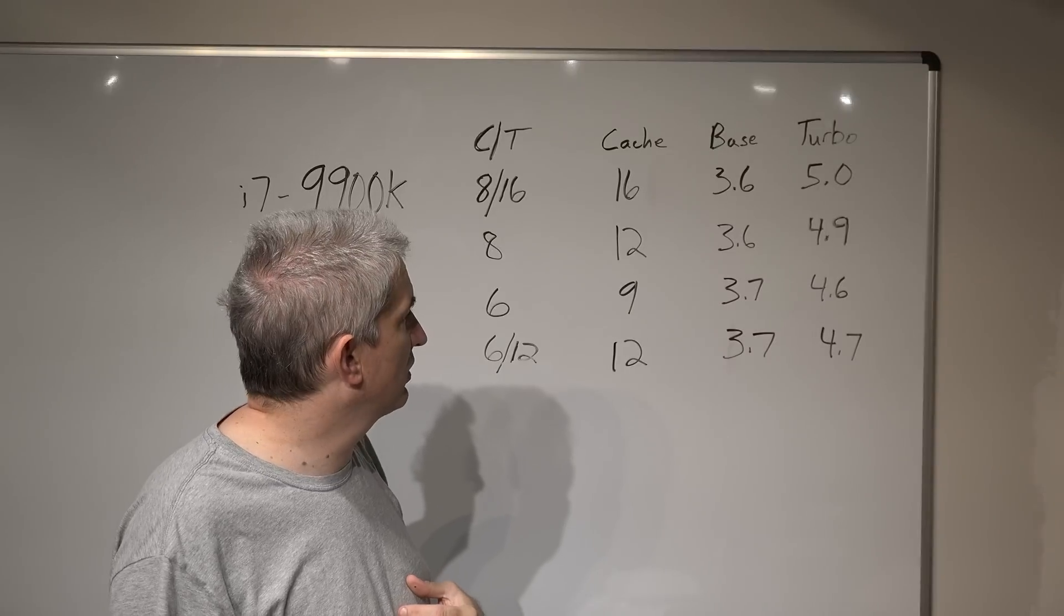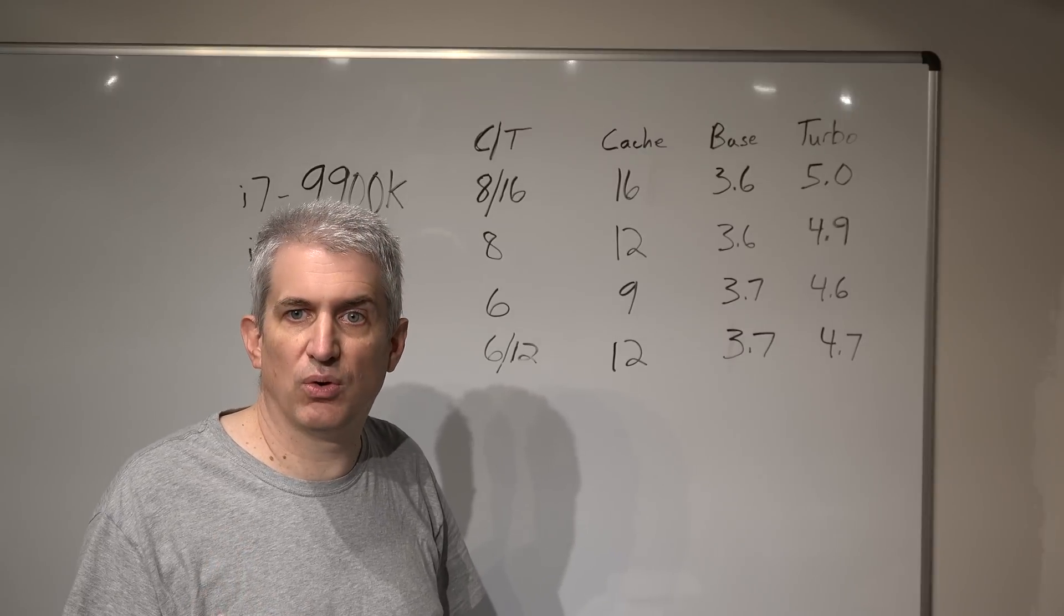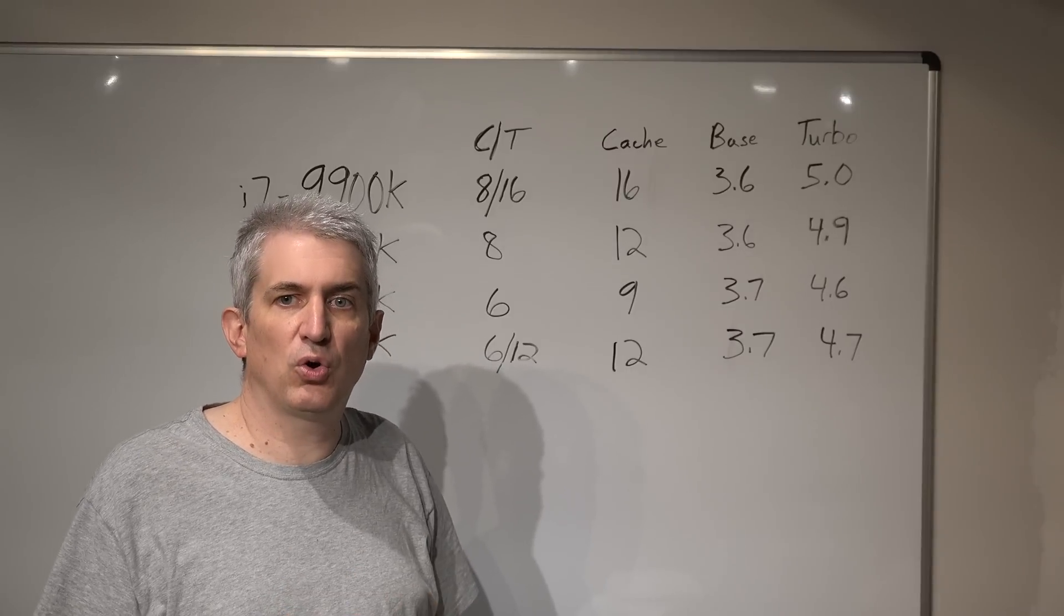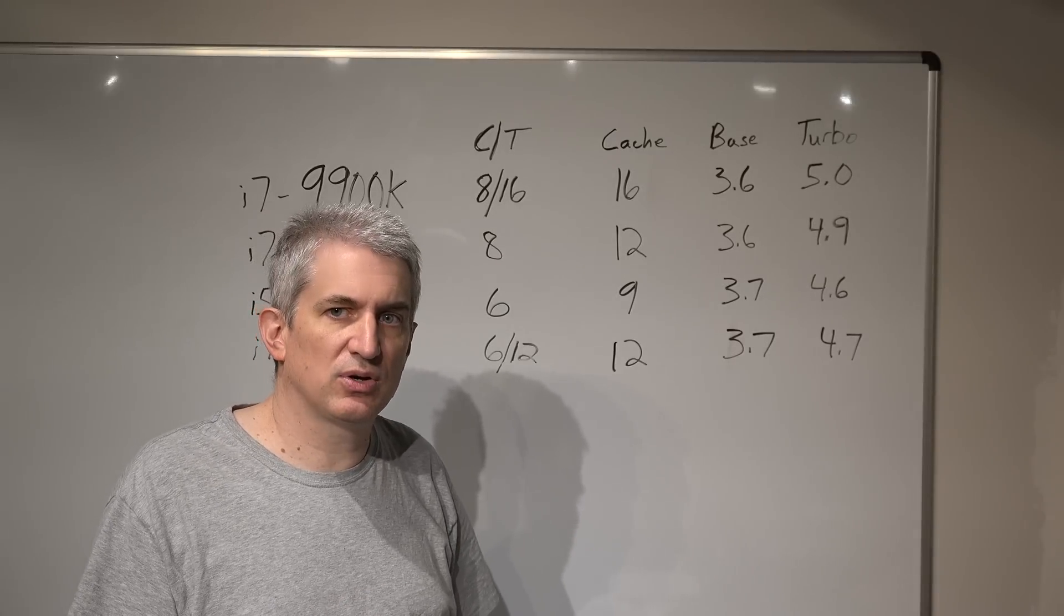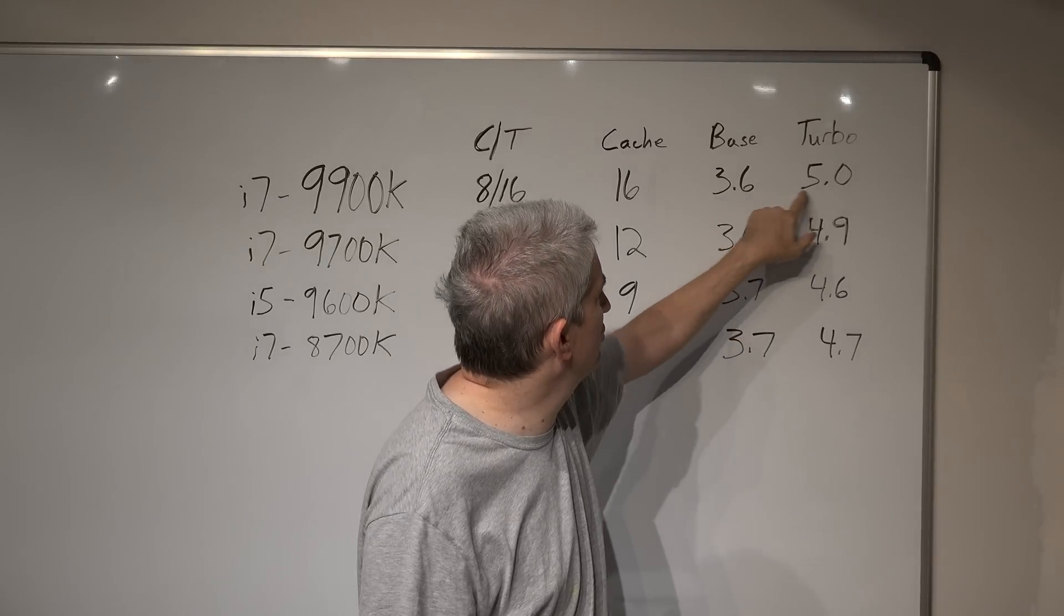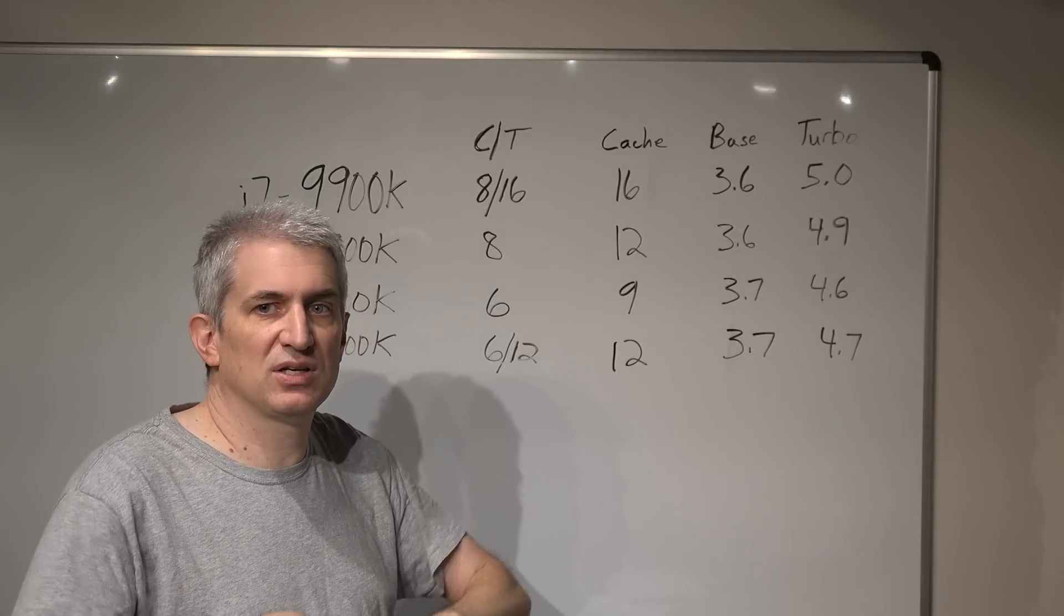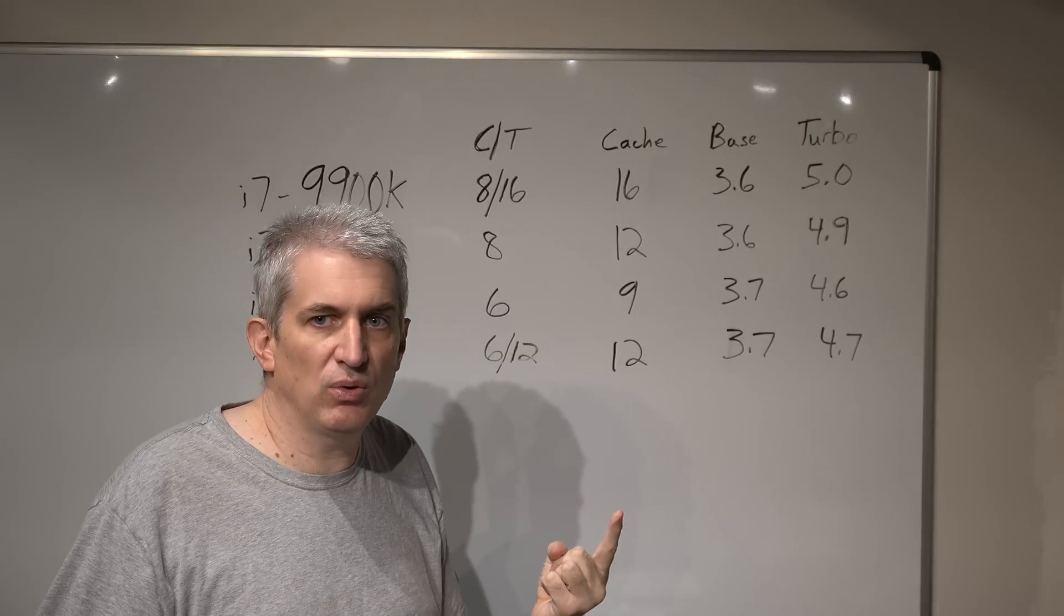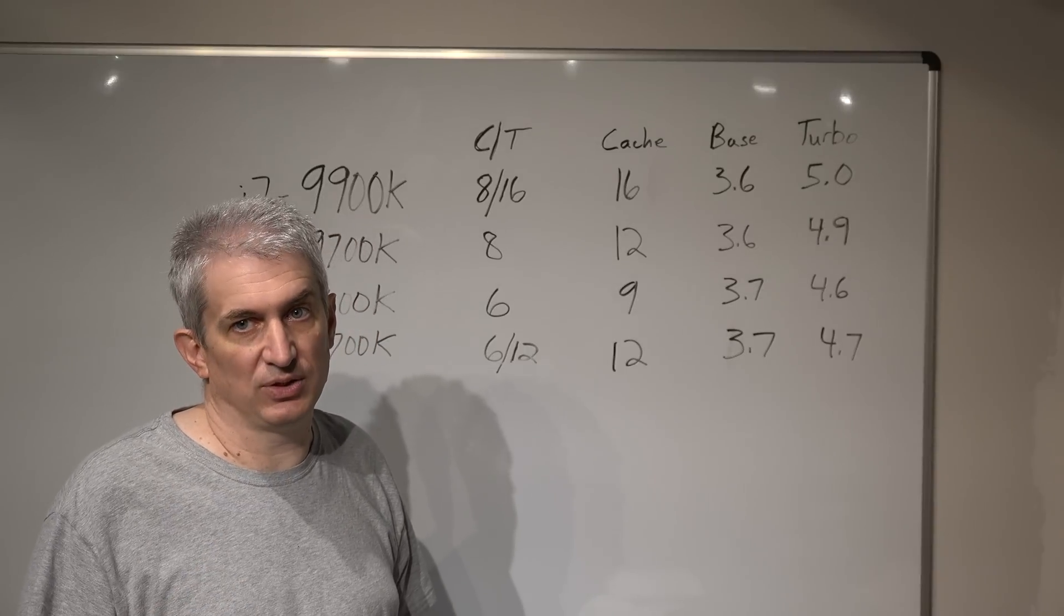That sort of explains what a base frequency versus a turbo frequency is. If you're not overclocking, expect something somewhere in the middle as to be your actual clock speed and performance that you'll get. Now what we do is we overclock these chips and we turn on something known as multi-core enhancement. What multi-core enhancement means is run all the cores at the maximum speed. With multi-core enhancement turned on, it says ignore how many cores are active, run the speed I tell you to run.